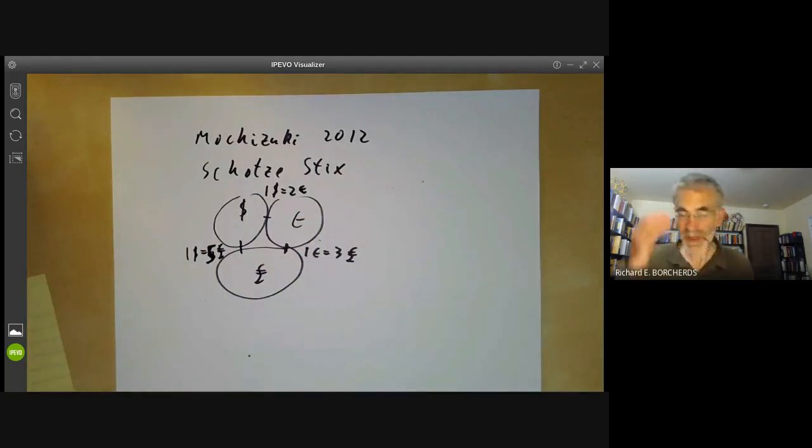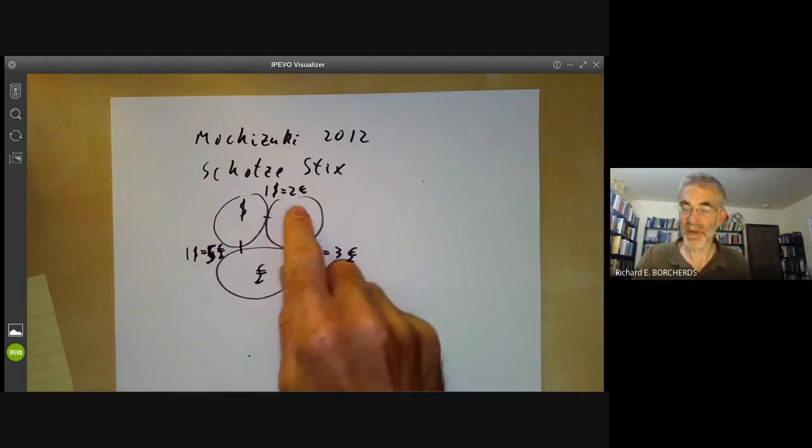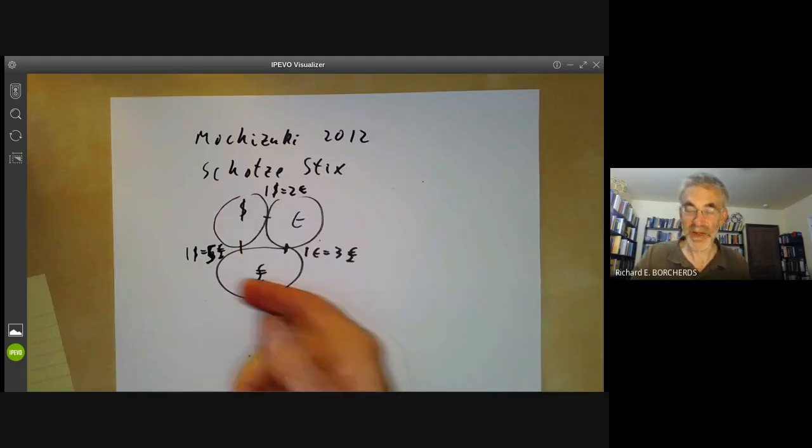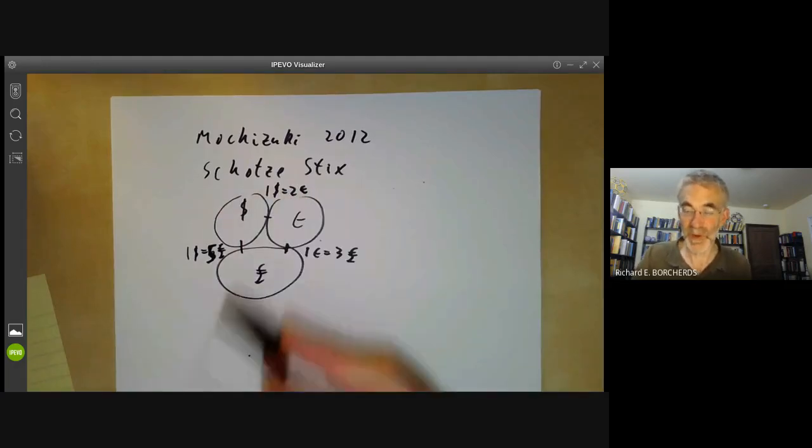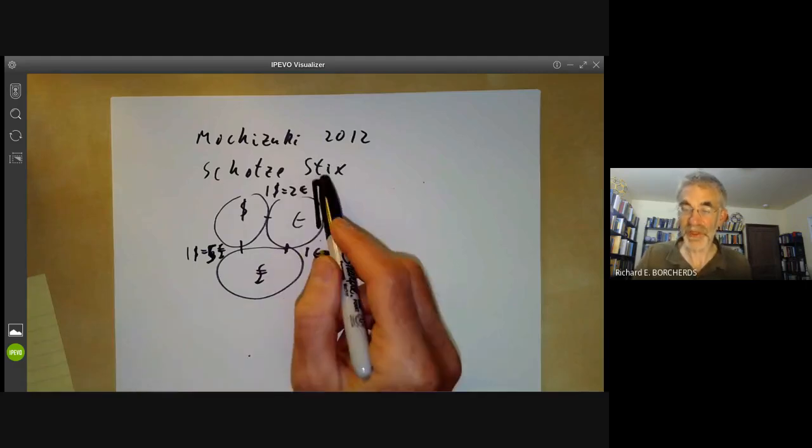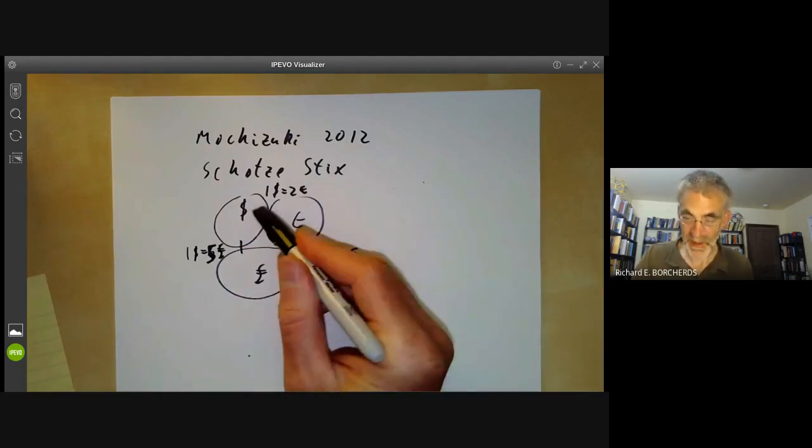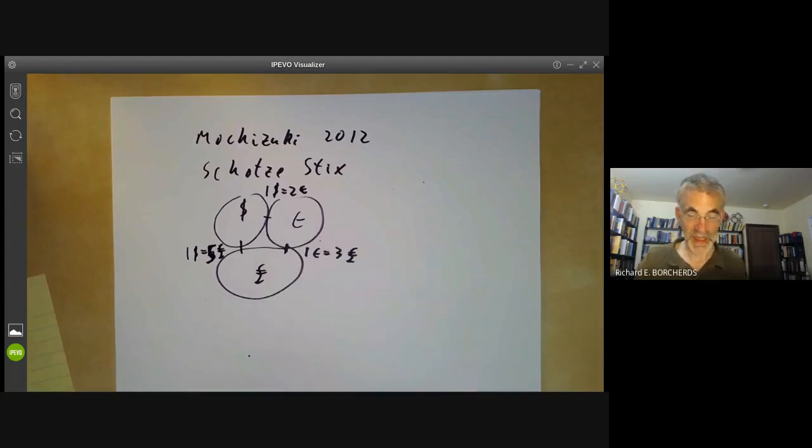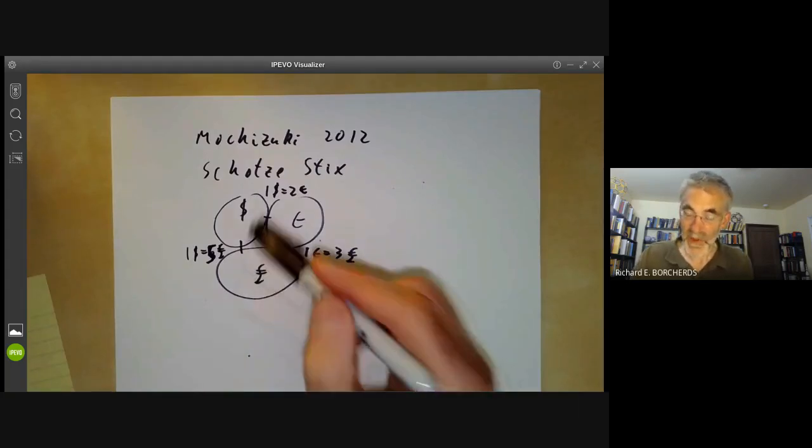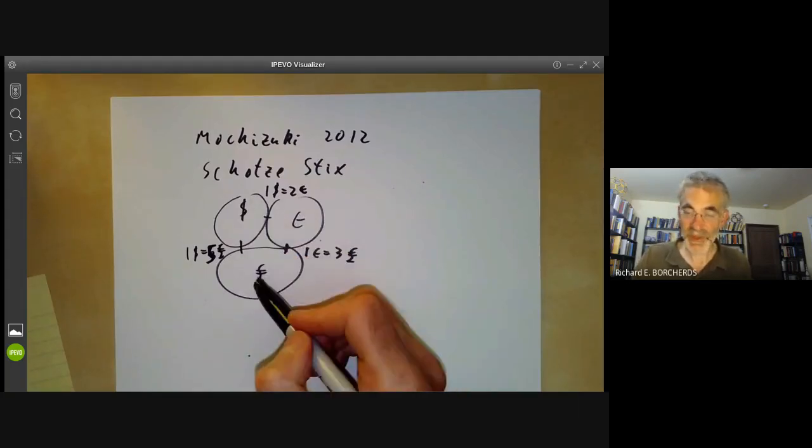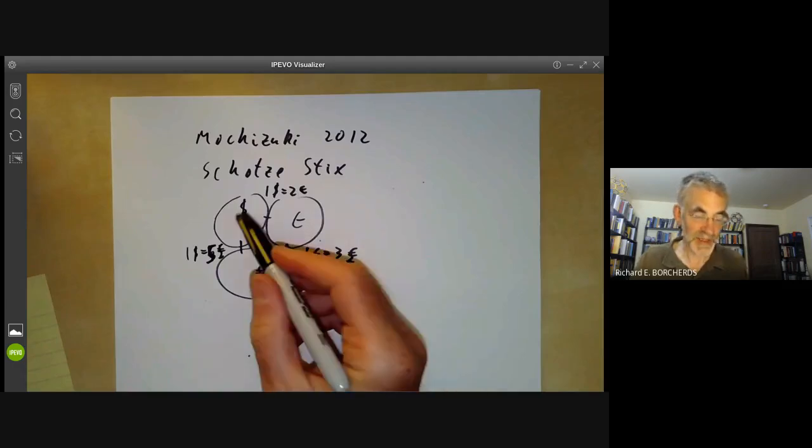So are these compatible? So Scholze and Stix isolated, well, there weren't three countries. There were more like six or seven countries in a big circle with lots of identifications. So Scholze and Stix examined Mochizuki's proof and found all these vector spaces and studied the compatibility conditions and said they thought these relations were not compatible. And Mochizuki said, yes, they are compatible.